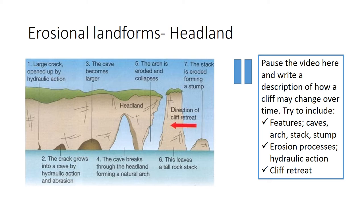At four, we can see that those continuous erosional processes have punched their way through the headland, forming a natural arch. At five, the top of the headland would have been too heavy and it has therefore collapsed. At six and seven, we can see that there is a tall stack left behind, and eventually that collapses to form a stump.